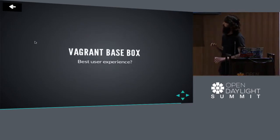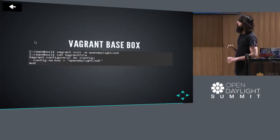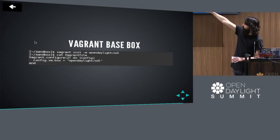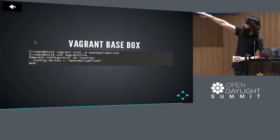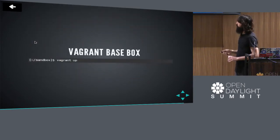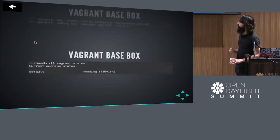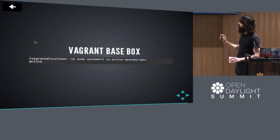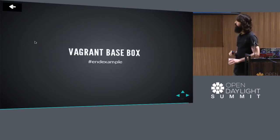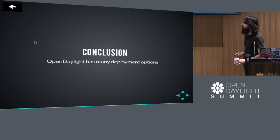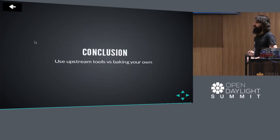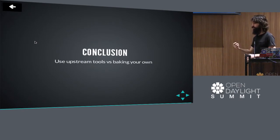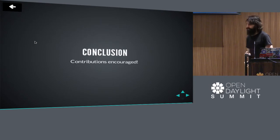Vagrant base box — also super easy, maybe the best user experience because people are familiar with VMs. All you have to do is create a Vagrantfile starting with the box opendaylight/odl and accepting the default version. You then vagrant up that box — it handles the download from Atlas. Our VM is running, we can connect, and ODL is already running. We didn't have to build it. We didn't have to start it. It's already just working. Conclusions: OpenDaylight has many deployment options. You should use upstream options instead of building your own. If you are building your own, come work with us and we'll make sure we have the features you need. Contributions welcome.